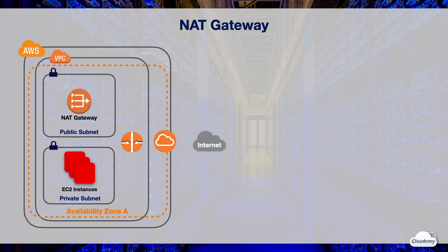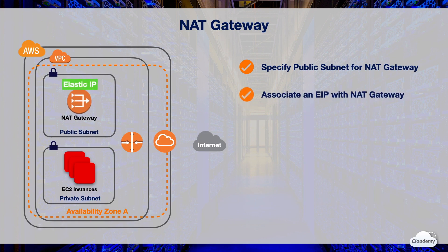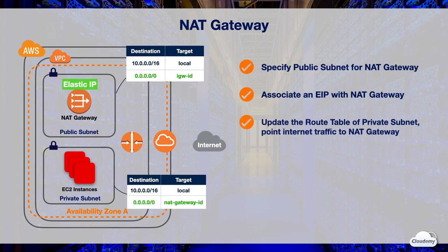You can use a NAT gateway to enable instances in a private subnet to connect to the internet or other AWS services, but prevent the internet from initiating a connection with those instances. To create a NAT gateway, you must specify the public subnet in which the NAT gateway should reside. You must also specify an elastic IP address to associate with the NAT gateway when you create it. The elastic IP address cannot be changed after you associate it with the NAT gateway. After you've created a NAT gateway, you must update the route table associated with one or more of your private subnets to point internet-bound traffic to the NAT gateway, which enables instances in your private subnets to communicate with the internet.